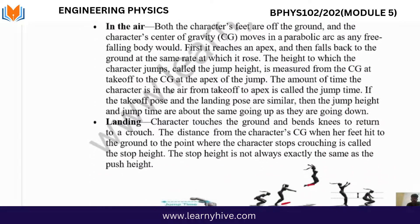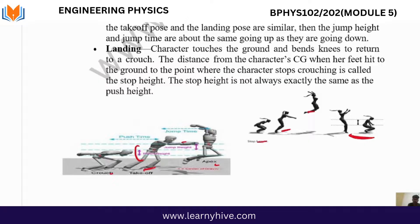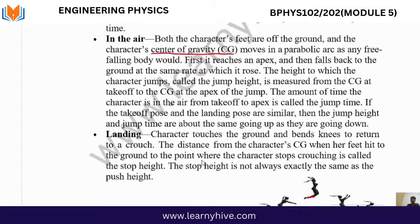In the air, both the character's feet are off the ground and the character's centre of gravity moves in a parabolic arc. The character first rises to the apex — the highest point — and then falls back to the ground at the same rate, which is called the rise.